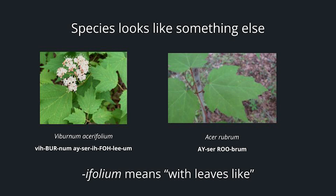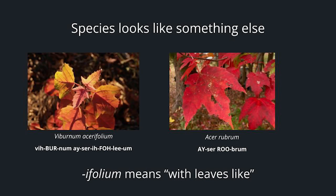When a species looks like something else, you can have the ending -folium, meaning with leaves like. Here we have Viburnum acerifolium, which means it has leaves like an Acer — a maple. And similar to Acer rubrum, they both have fantastic fall color.